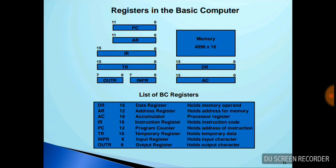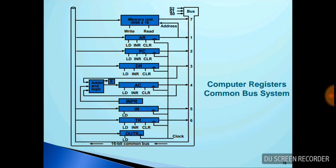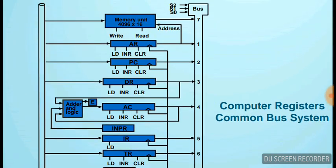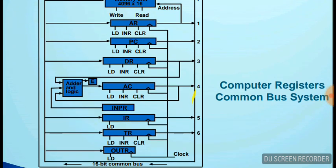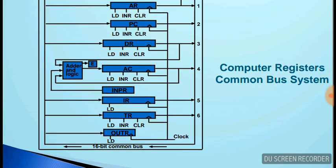Moving towards the common bus system diagram, the arrangement is as follows: the memory unit is 4096×16; AR is 12 bits; PC is 12 bits; DR is 16 bits; AC is 16 bits; INPR is 8 bits; IR is 16 bits; TR is 16 bits; and OUTR is 8 bits.